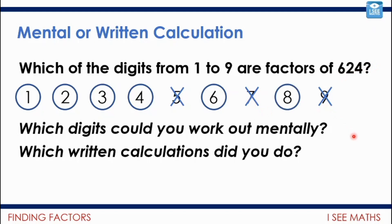Now, 8 is. Now, 8 is probably one where I think I would use a written calculation to do that. I'd probably look at doing 624 divided by 8. And there's other ways it can be broken down as well. But really important to think, well, when should I work it out mentally? And when should I use a written method?